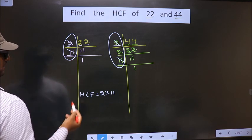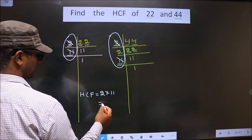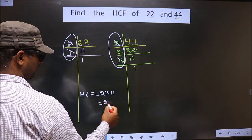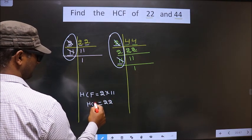No more numbers are present. So our HCF is 2 into 11. 22 is our HCF.